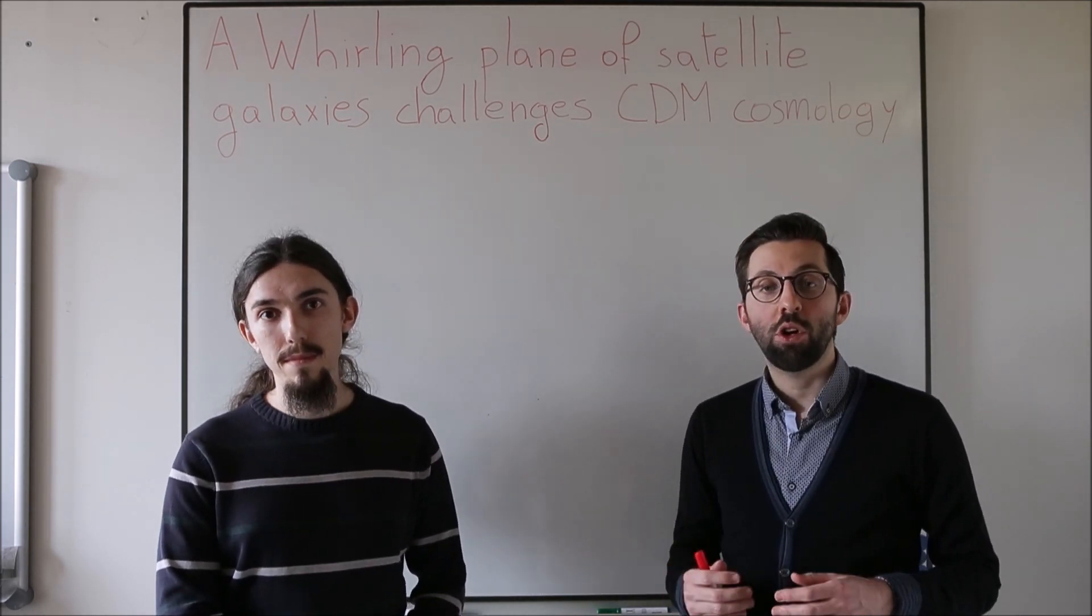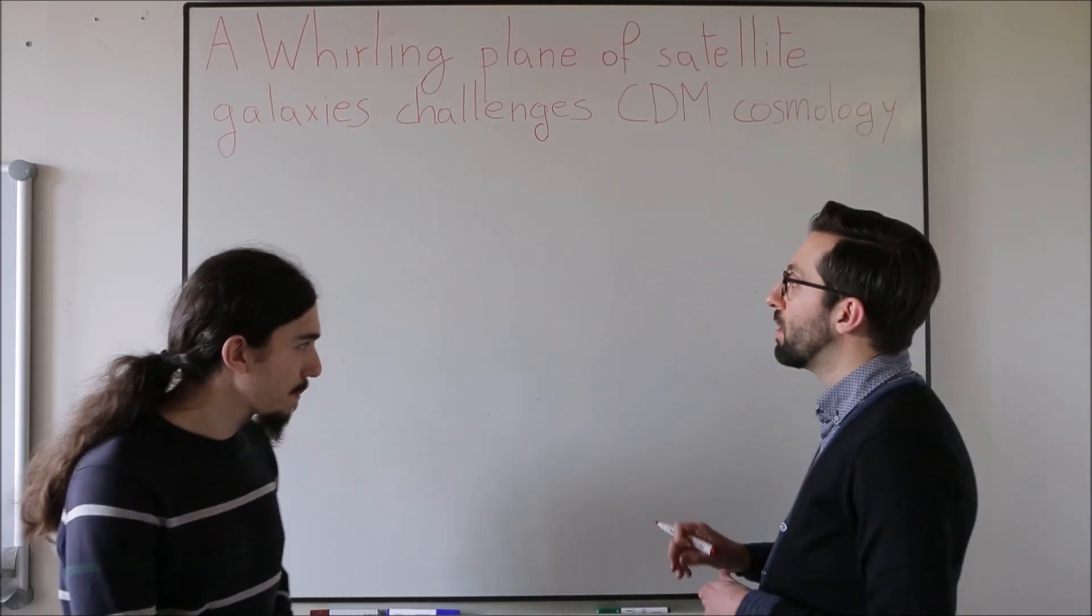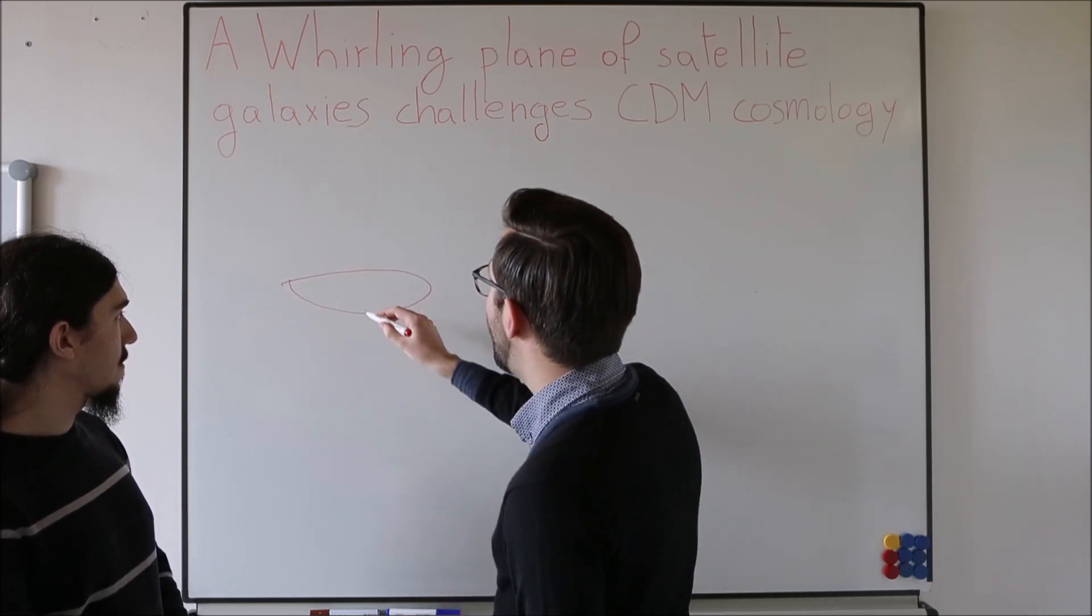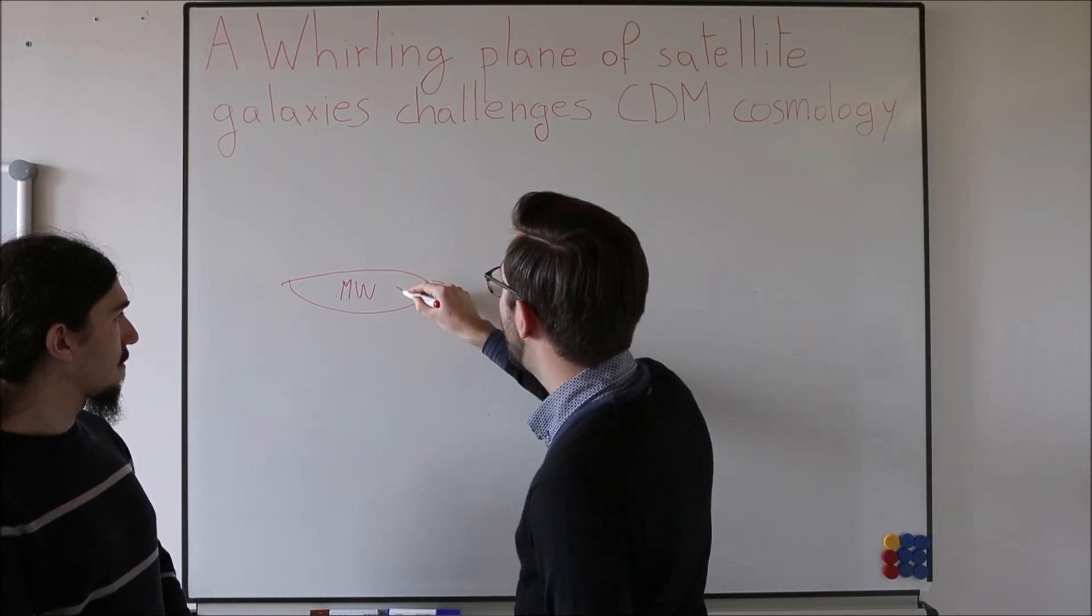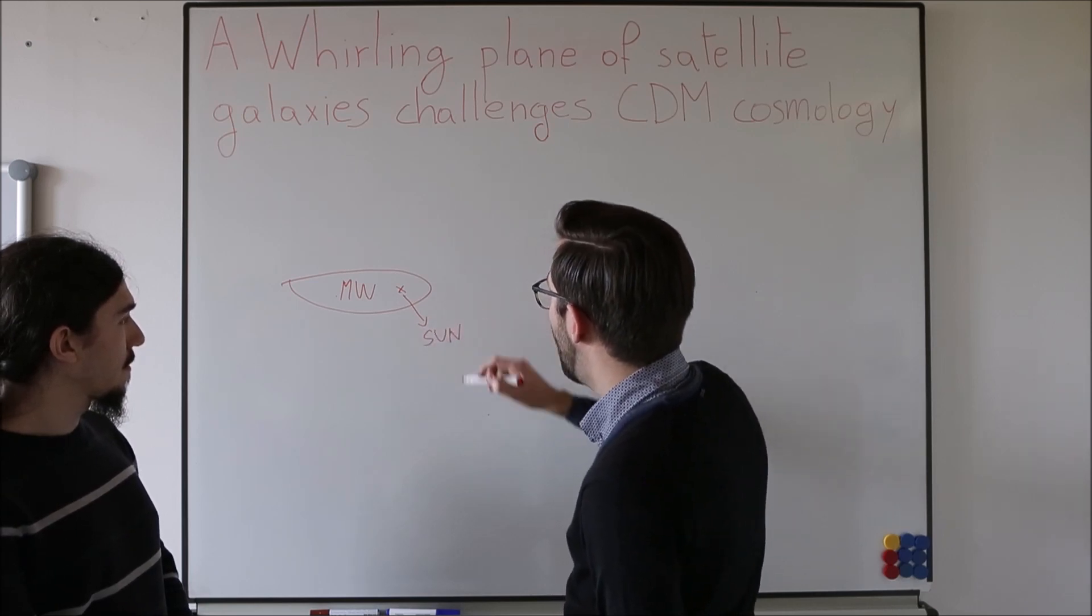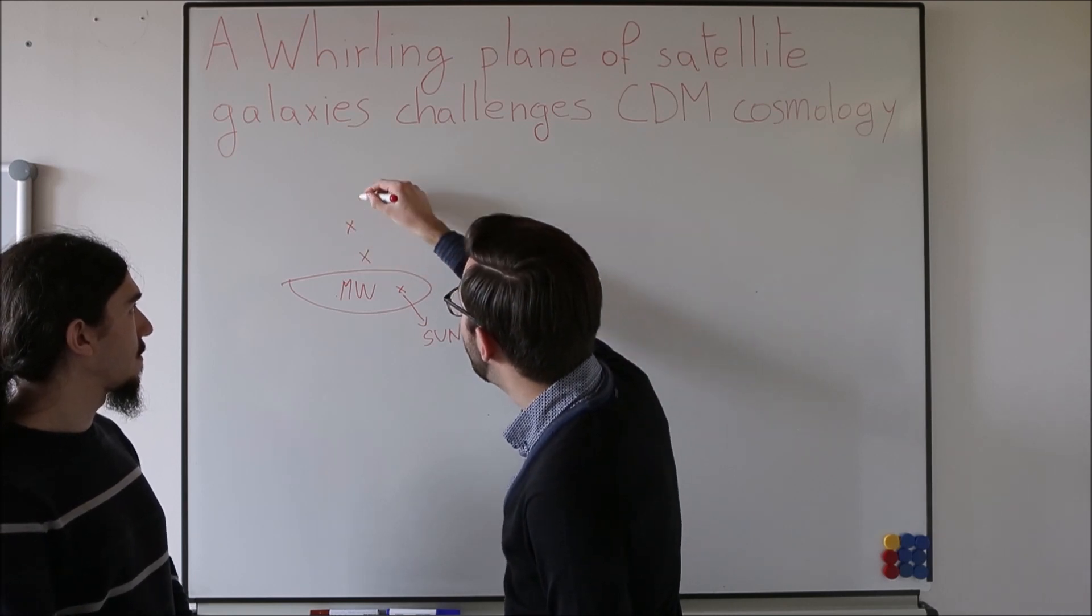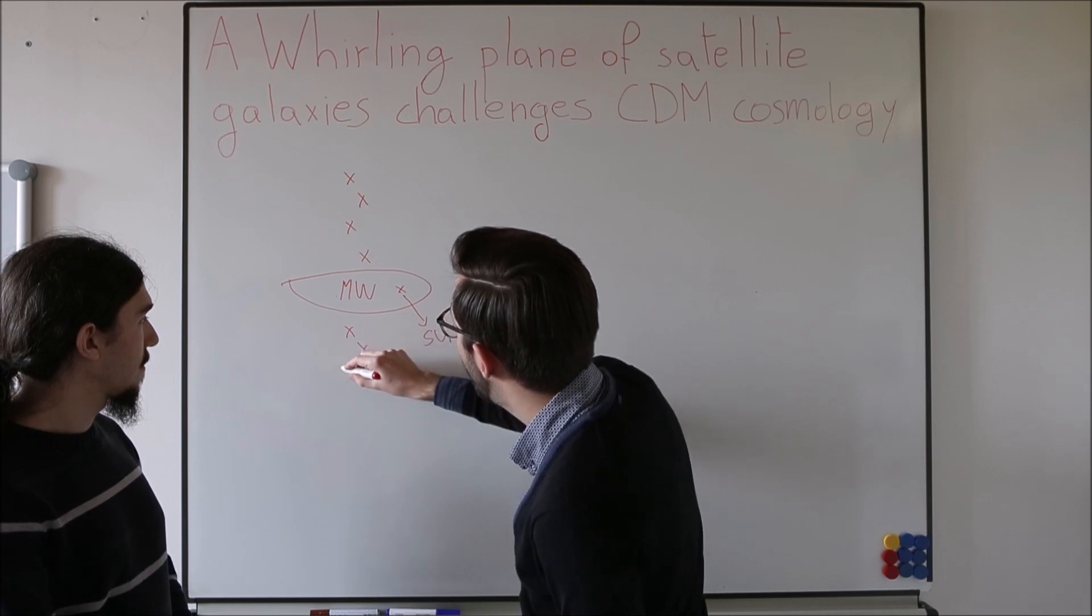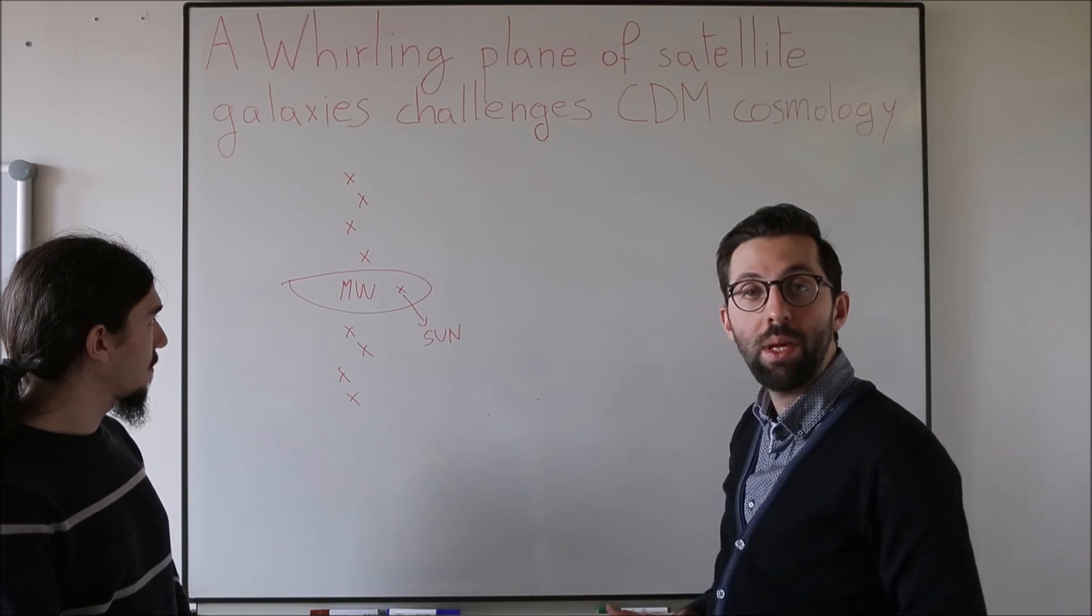The distribution of satellite galaxies around the Milky Way is very interesting. Let me draw a simple sketch. The Milky Way is essentially a disk of stars and gas. The Sun is located somewhere here. The dwarf satellites around the Milky Way are distributed on a plane which is perpendicular to the stellar disk of the Milky Way.